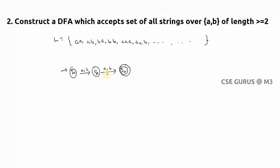Now it is asking not only length equals two, but two and more — at least two. So what you need to do is simply put a self-loop for the final state q2 with a and b. Now you can observe what strings it is accepting.